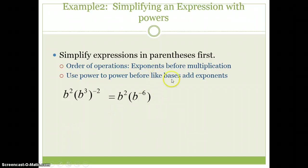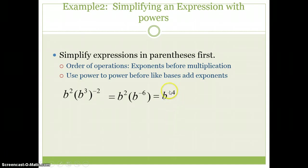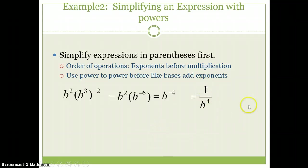Now, I'm going to do like basis add exponents. I got b squared times b to the negative sixth. Two plus negative six is negative four. So I get b to the negative fourth. I can't have a negative exponent in the answer. So I got to move the b to the negative fourth down to make it positive four. So I get one over b to the fourth.